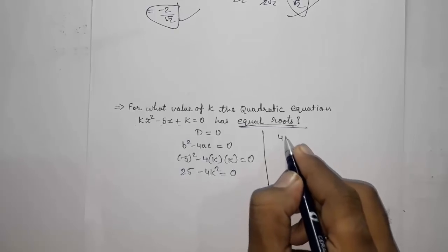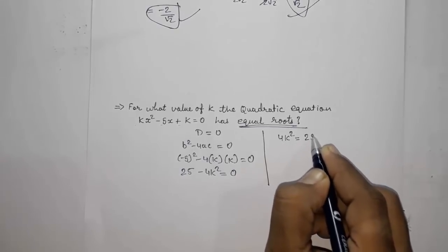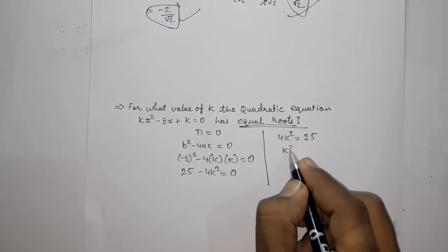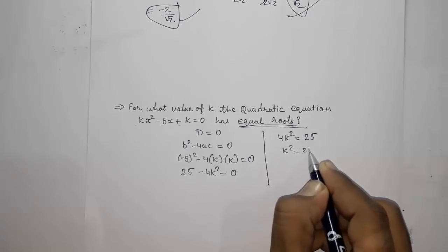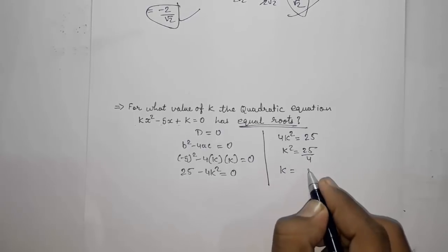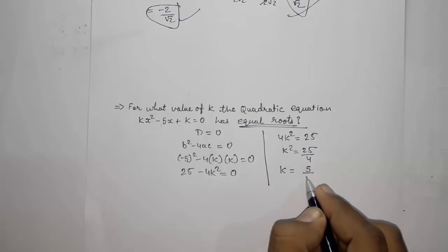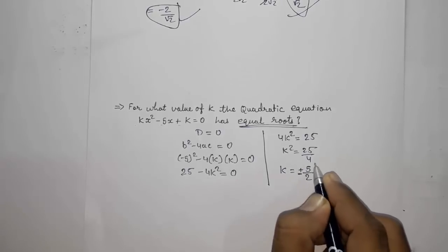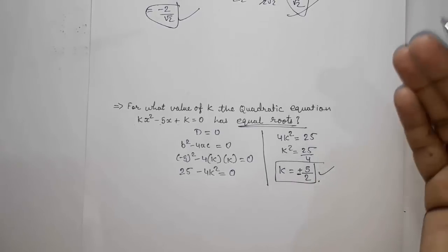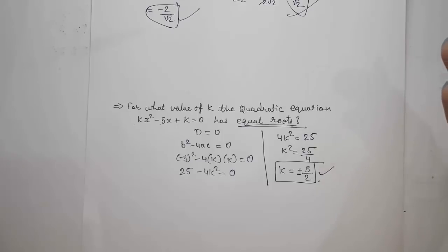From 25 − 4k² = 0, we get 4k² = 25, so k² = 25/4. Taking the square root: k = ±5/2. I have tried to cover all the important points of this chapter. If you like this video, please subscribe to my channel and share it with your friends. Thank you so much for watching!